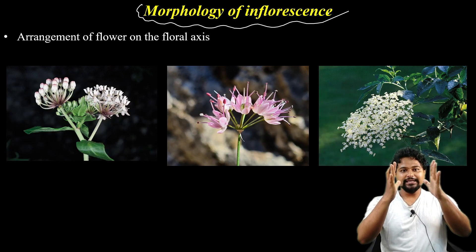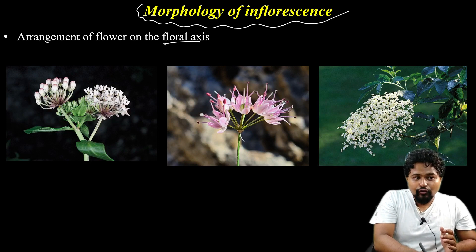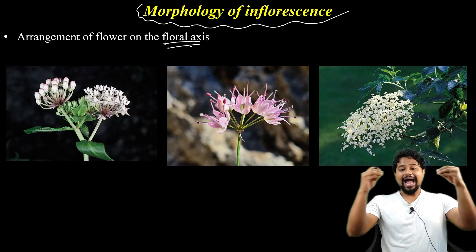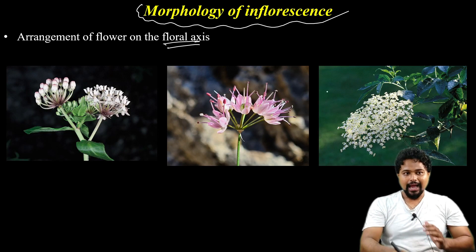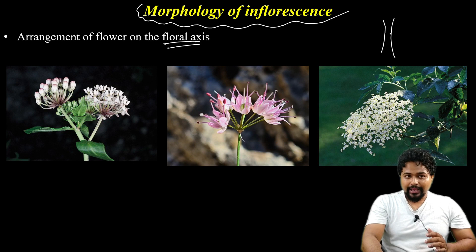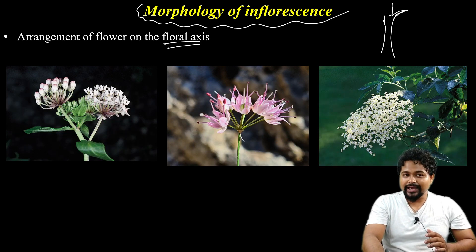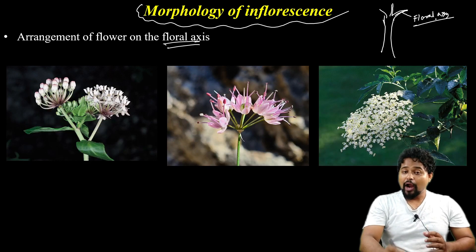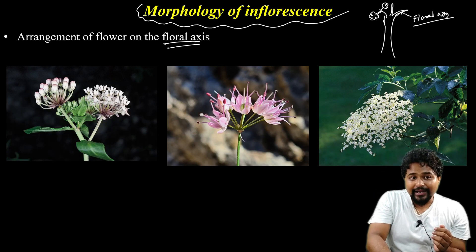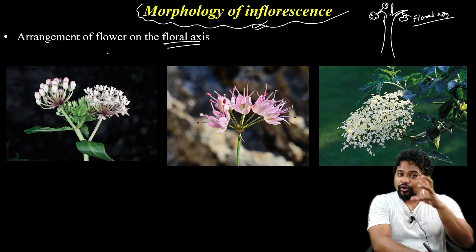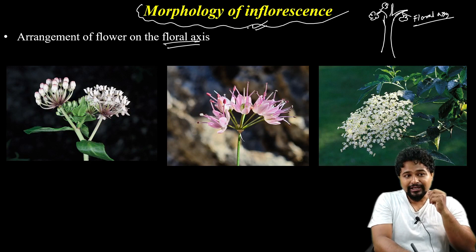Inflorescence means that the floral axis — the plant has a stem and the stem is modified. The floral axis means the axis bearing flowers. Inflorescence means the arrangement of flowers on the floral axis — this arrangement is called inflorescence.